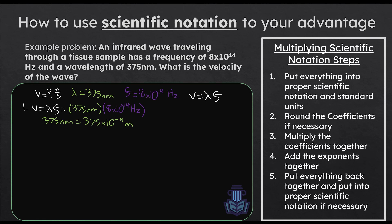Now we have it in standard units, but we need to convert to proper scientific notation — we need the coefficient between 1 and 10. So we're going to move this decimal to the left, not once but twice. Remember, whenever we move the decimal to the left we make the exponent more positive — we increase it by two. So written in proper scientific notation, this is 3.75 × 10^−7 meters.